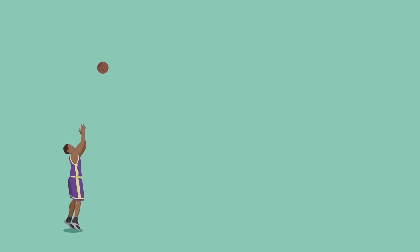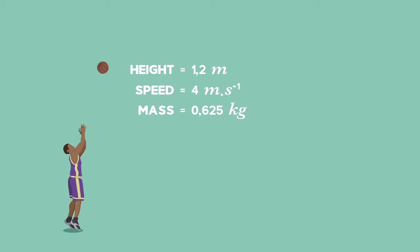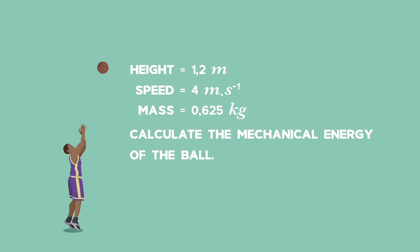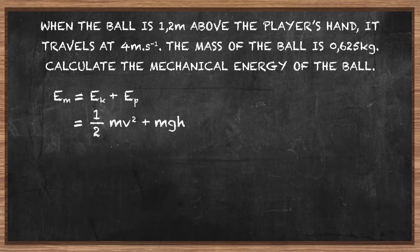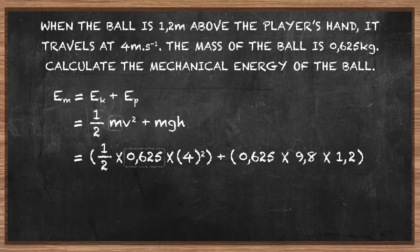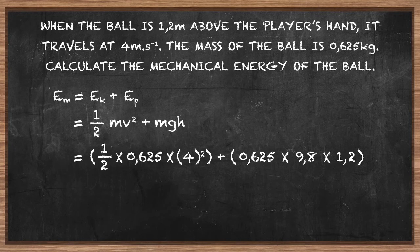Let's look at an example. A basketball player throws the ball vertically up in the air. When the ball is 1.2 meters above his hand, it's traveling upwards at 4 meters per second. The mass of the ball is 0.625 kilograms. Calculate the mechanical energy of the ball at this height. Mechanical energy equals the sum of kinetic and potential energy: ½mv² + mgh. Substituting the values carefully and remembering to square the speed, the ball has 12.35 joules of mechanical energy.